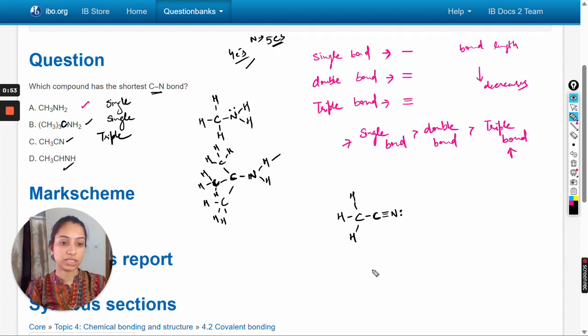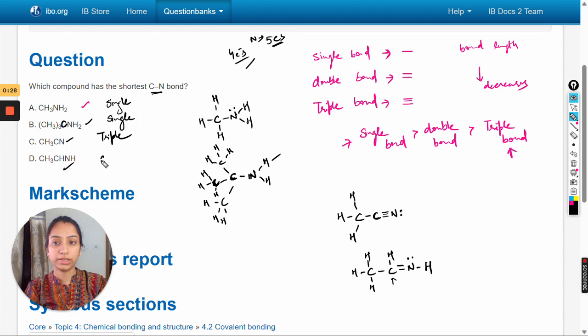Next is CH3CHNH. Here one lone pair and two electrons are already shared, so one more electron is shared with carbon. Now there are four bonds around nitrogen and the octet is complete for carbon and nitrogen. So here is a double bond between carbon and nitrogen.